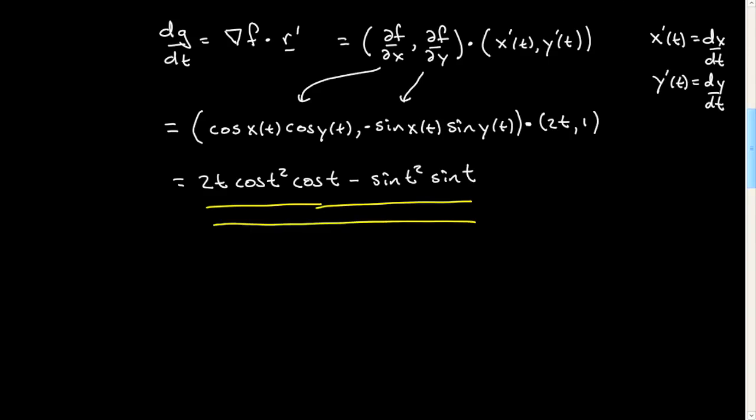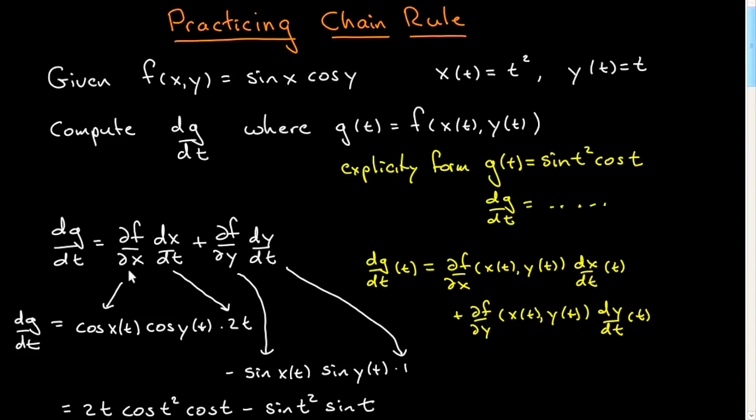So again, in fact, it's worth emphasizing this is not a different formula. It's simply written in a different way, so I have the x and y partial derivatives written together as a gradient. And then I have the derivatives of these component functions written separately, and I take the dot product. But, of course, that is exactly the same as this sum.